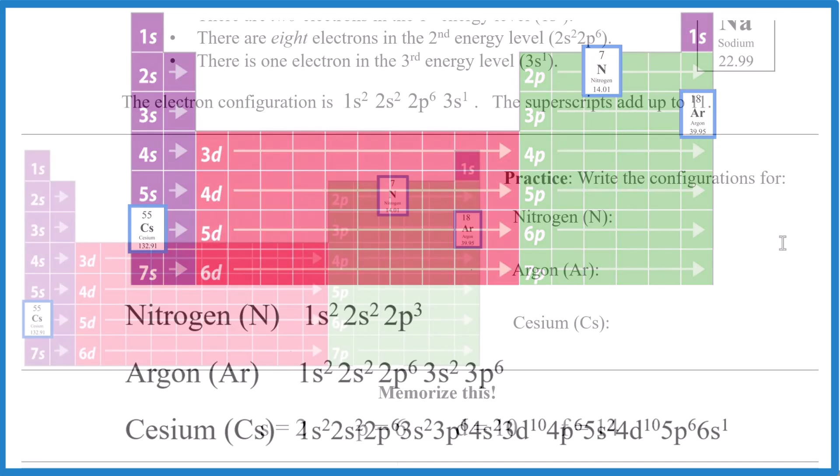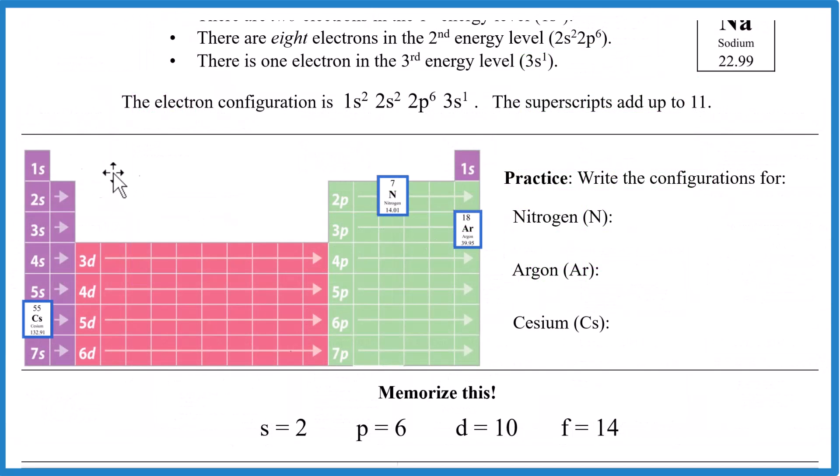So one of the nice things is we see that Ss can only have 2, hold up to 2. Ps, 1, 2, 3, 4, 5, 6, can hold up to 6. Ds, 10, and Fs not showing. They can hold up to 14. Good thing to memorize. But you see where it comes from. And you don't see that with the diagonal chart. So this is kind of nice.